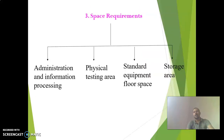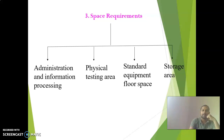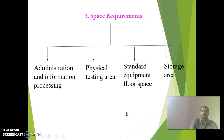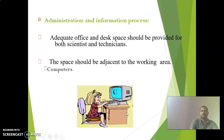Space requirements for a pilot plant include: administration and information processing area, physical testing area, standard equipment floor space, and storage area. These are needed to accommodate different types of facilities for administration, quality control, equipment, and material storage.